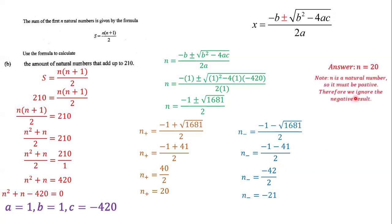Our answer is n = 20. Note that n is a natural number so it must be positive — we ignore the negative result of −21. Natural numbers start from 1 and continue positively, so we cannot have a negative amount of natural numbers. Therefore n = 20 is our final answer.